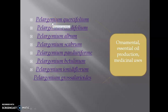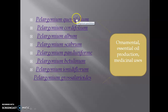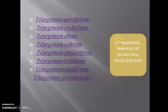Pelargonium is the second largest genera of family Geraniaceae, used for the production of essential oil. The leaves of that plant are also used for extraction of essential oil. They possess beautiful flowers, so they are planted as ornamental plants, and they also possess medicinal value.